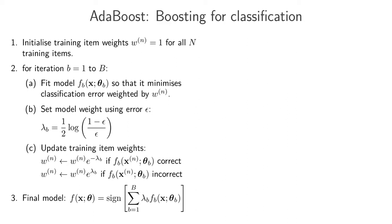In step A it says: fit model FB so that it minimizes the classification error weighted by the training item weights. You can write that out a little bit more precisely. The goal in step A is to minimize the sum over all our training items from little n=1 to big N. I'm going to use an indicator function and write out the mistakes that we make on our training items.